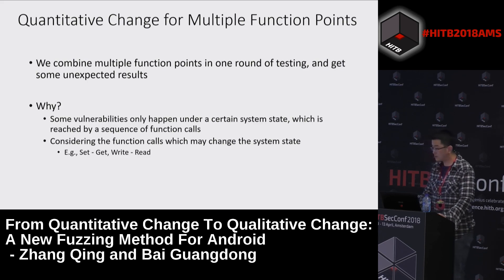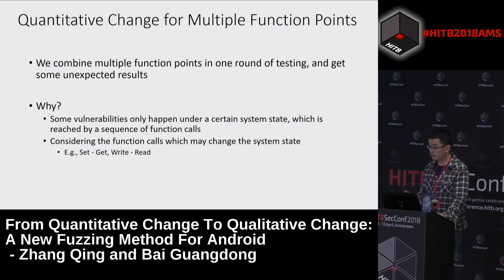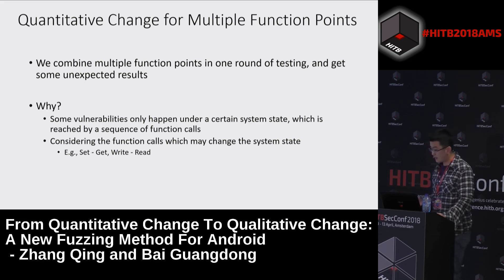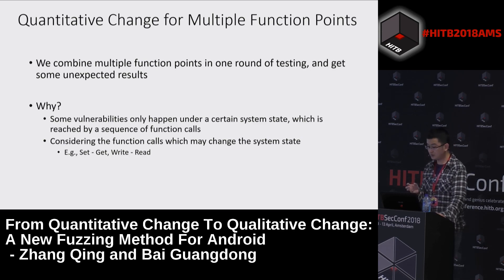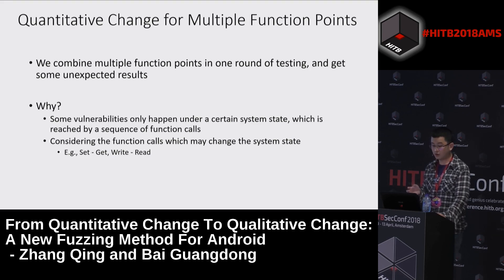What about multiple function points? We combine multiple function points in one round of testing. Similar to the previous idea, we get unexpected results. This happens because some vulnerabilities only occur under a certain system state which is reached by a sequence of function calls. That means we should consider function calls that may change the system state, such as set, get, write, read, and other methods.